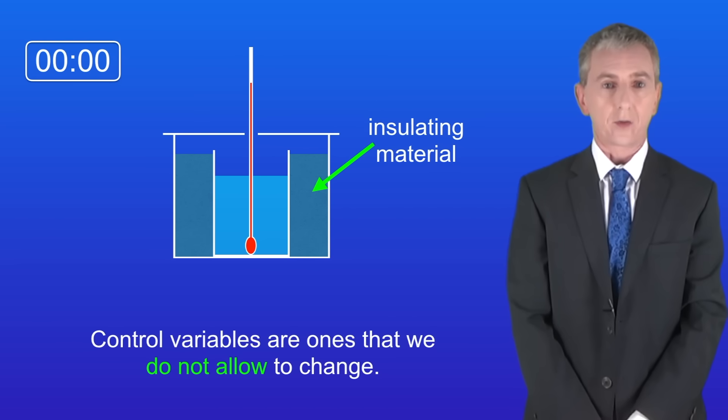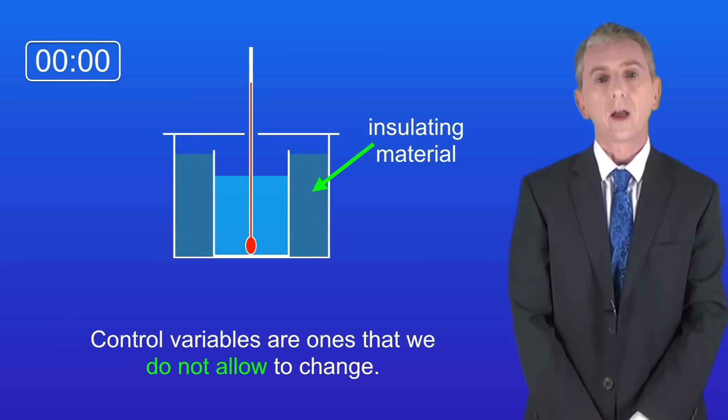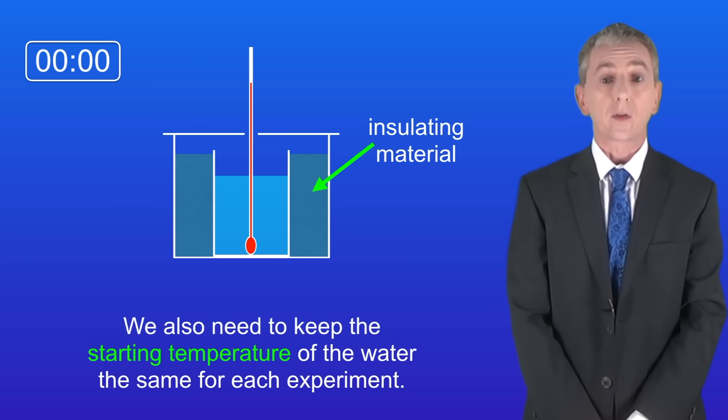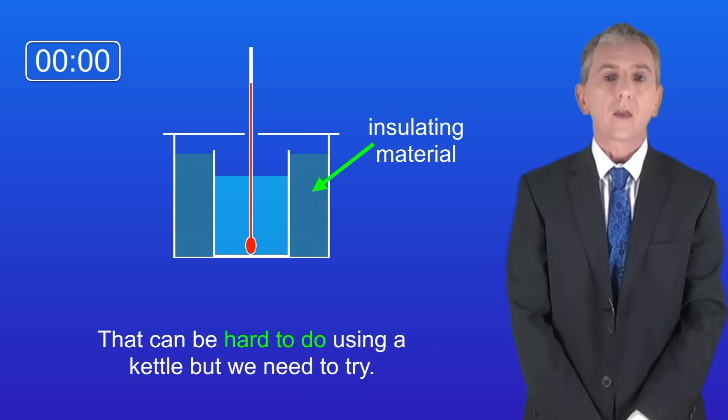And finally control variables are ones that we don't allow to change. These are the volume of water and the mass of insulating material. We also need to keep the starting temperature of the water the same for each experiment. That can be hard to do using a kettle but we need to try.